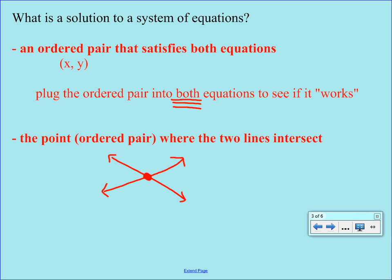So when we talk about a solution, the fact that the ordered pair works in both equations means that that point is on both of the lines, and in fact that point is where the two lines intersect. So these two ideas of a solution work together hand in hand.